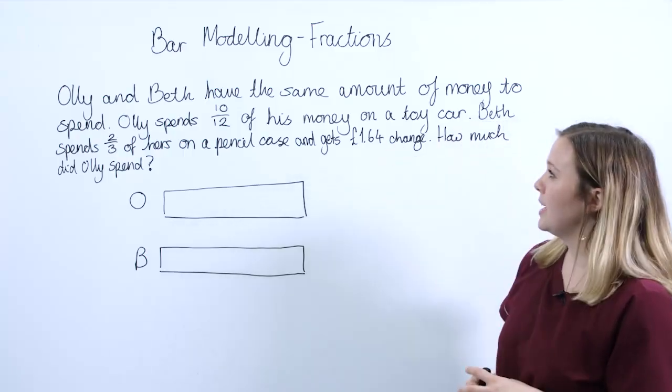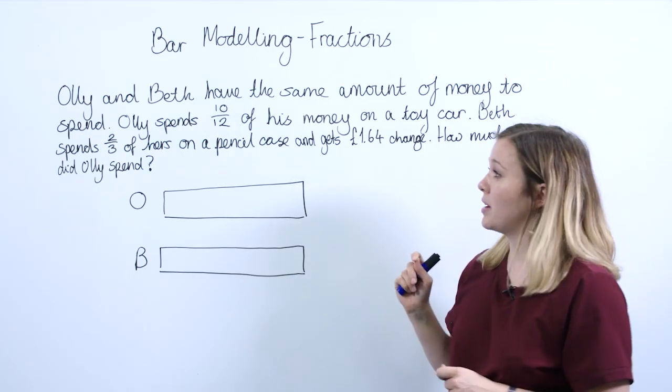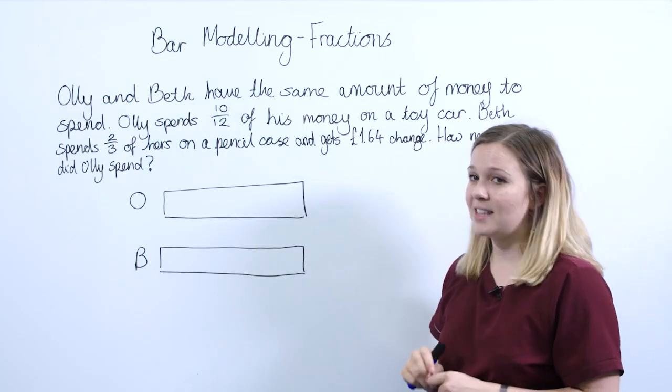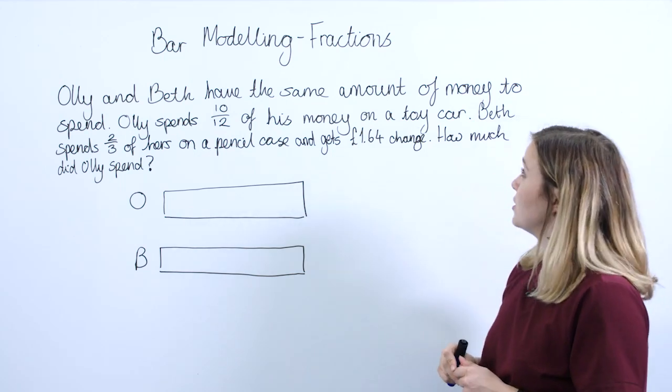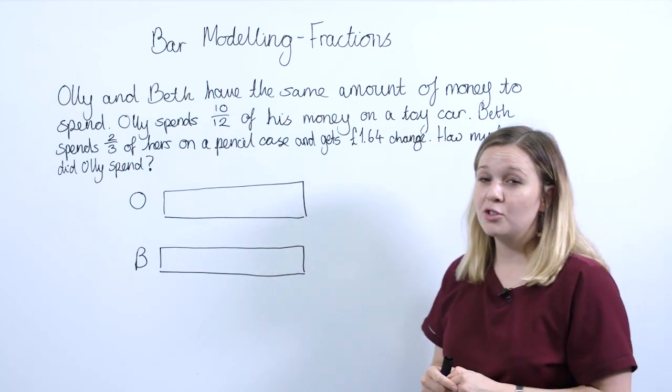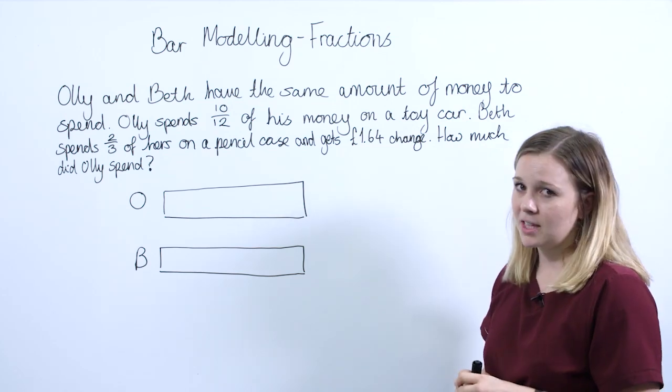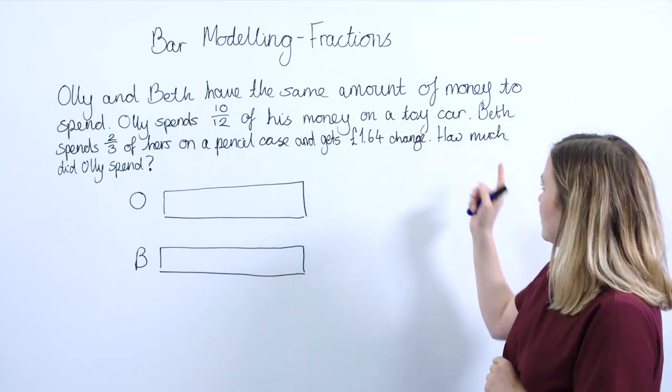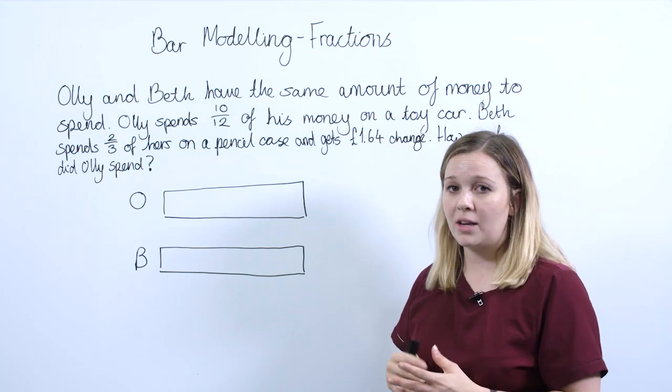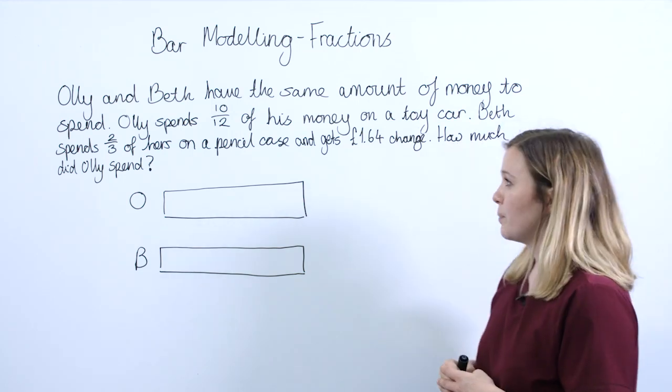Ollie and Beth have the same amount of money to spend. Ollie spends 10/12 of his money on a toy car, and Beth spends 2/3 of hers on a pencil case. She gets £1.64 change, and the question is asking us to find how much did Ollie spend.